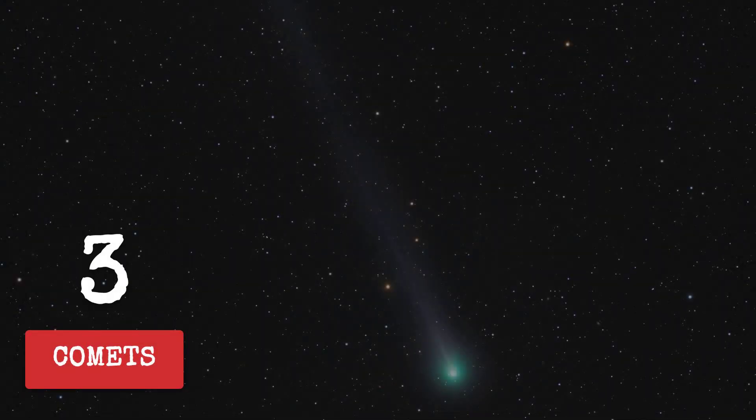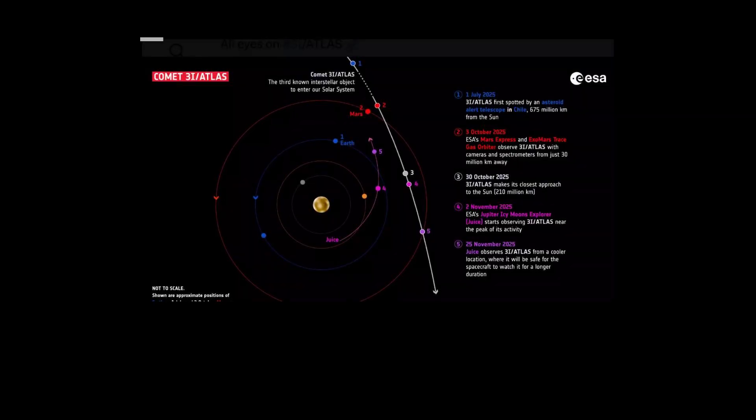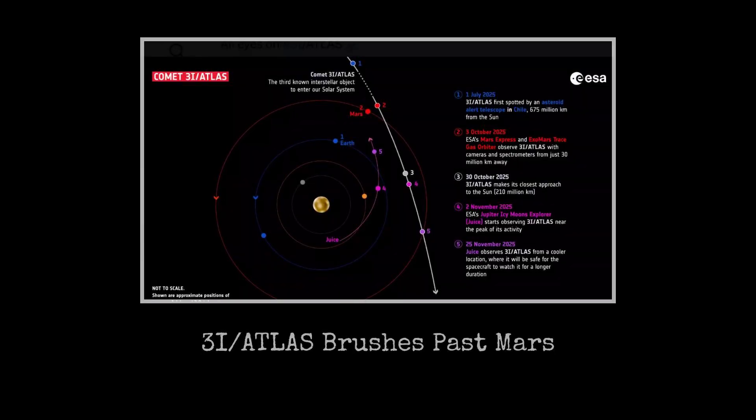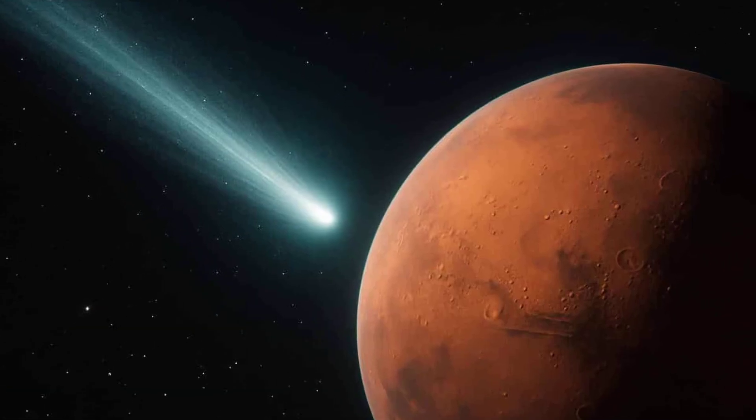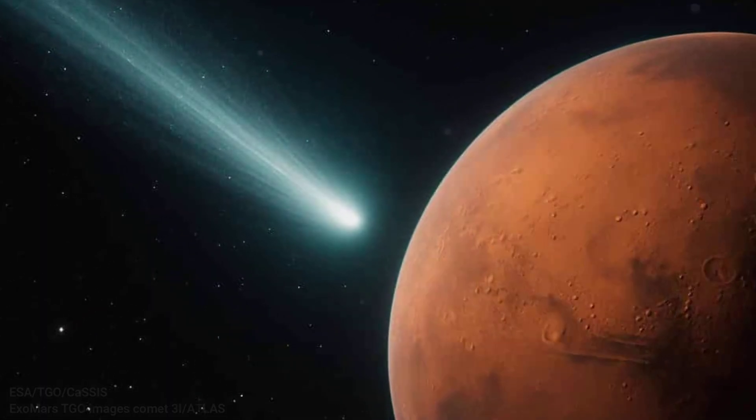Only three true interstellar comets have ever been seen, but this one, potentially older than our solar system, swept past Mars just close enough for ExoMars and Mars Express to lock on. The first public glimpse threw the scientific community into a frenzy, a faint otherworldly coma against the Martian backdrop, defying estimates of what these spacecraft could capture.